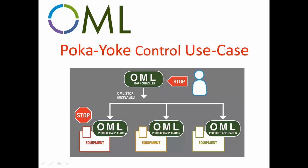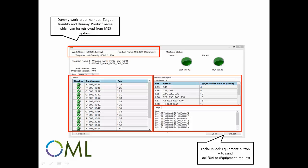The following use case demonstrates how the POCOIO control works. Here you can see the work order number, target quantity, and the product name, which can be retrieved from the MES system.